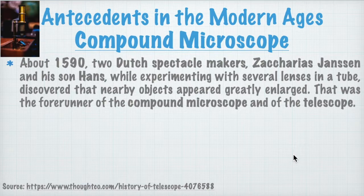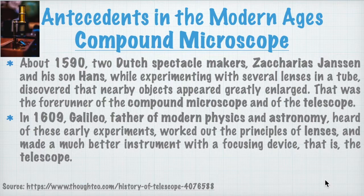In 1609, Galileo, the father of modern physics and astronomy, heard of these experiments and worked out the principle of the lenses. He made a much better instrument with a focusing device, which we call the telescope. That's the end of the compound microscope part.